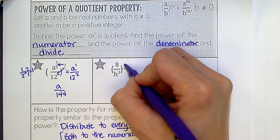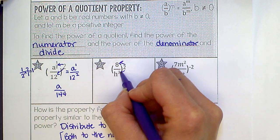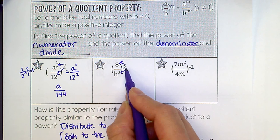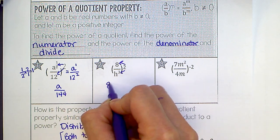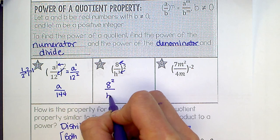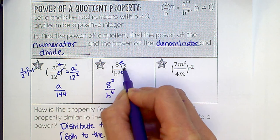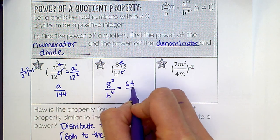Okay, we're going to take a to the 2nd and h to the 3rd raised to the 2nd. So we have 8 squared over h to the 6th, 3 times 2. So we get 64 over h to the 6th.